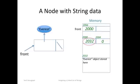At the address 2032 is the string Everest. A string is a Java object that will take up a variable amount of space depending on the length of the string. What is shown here is only the starting address of the Everest string object. The actual number of bytes occupied by the object is not shown and is not required for understanding how a linked list of strings works.